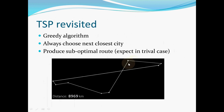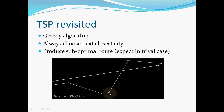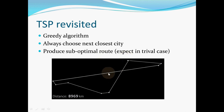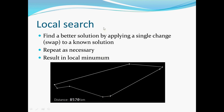Now let's move to the TSP problem. If we use the greedy algorithm, it will always choose the next closest city. For example, given these cities where each point represents a city, it will find the next closest city — choosing this one instead of another — because it is closer. However, this approach results in a sub-optimal route; it finds a local optimum, not a global optimum.